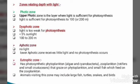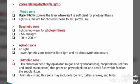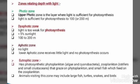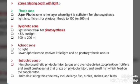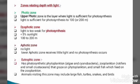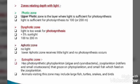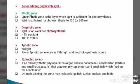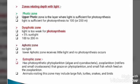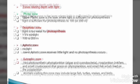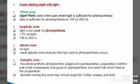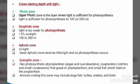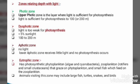Relating depth with light: the photic zone is the upper layer where light is sufficient for photosynthesis. The sub-photic zone is where light is too weak for photosynthesis. The aphotic zone has no light. The euphotic zone has photosynthetic phytoplankton that are grazed upon by zooplankton.